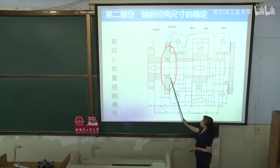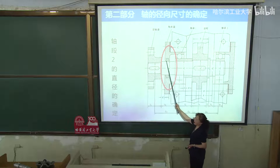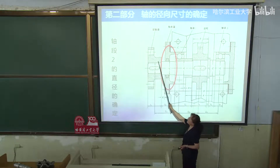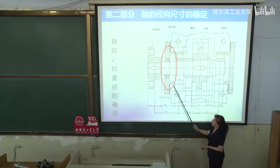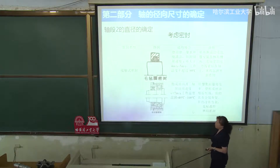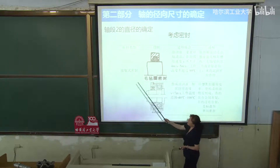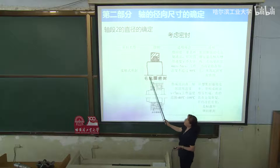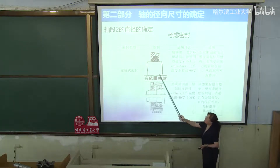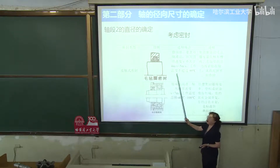第一段轴径确定时考虑了：①扭矩法初估直径；②键槽影响；③协调联轴器尺寸。根据这三点确定了第一段轴径。接着看第二段轴径：它需要有密封，同时是前一段半联轴器的定位轴肩。密封主要有接触式密封和非接触式密封。接触式密封中：毛毡圈密封用于清洁环境、脂润滑。